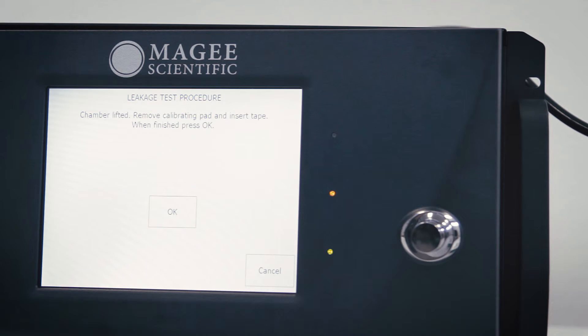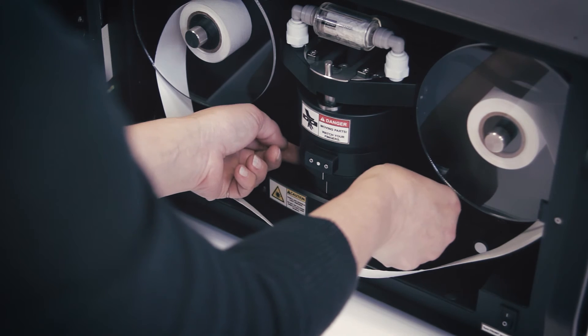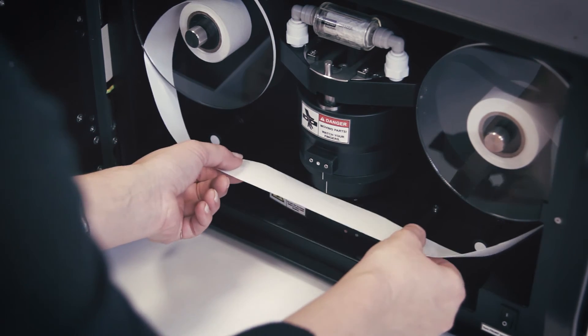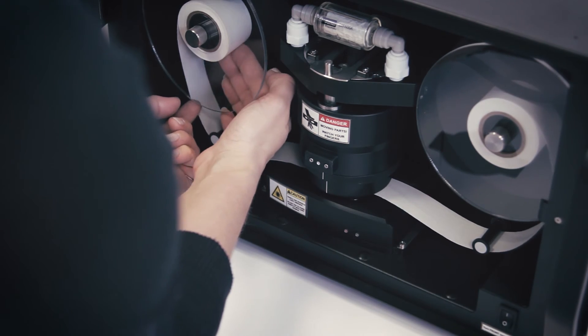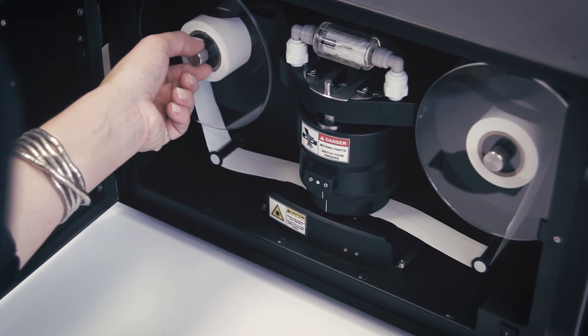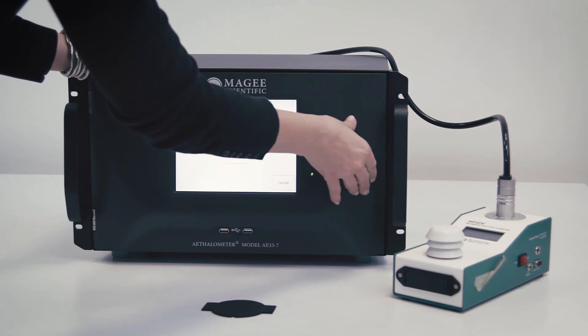When finished, remove the flow calibration pad and replace the filter tape. Press OK when done.